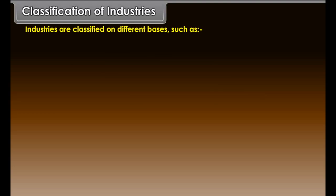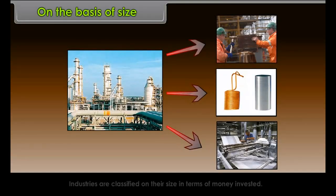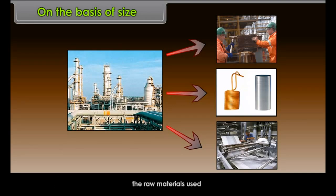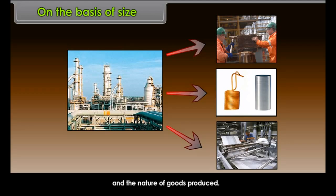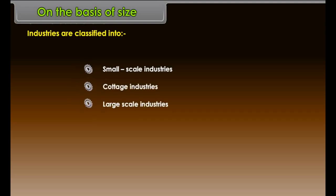Industries are classified on different bases: on the basis of size, on the basis of ownership, and on the basis of raw materials. On the basis of size, industries are classified according to the money invested. The size of any industry largely depends upon the number of workers, the raw materials used, and the nature of goods produced.